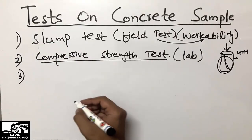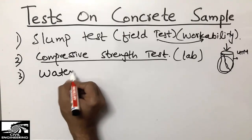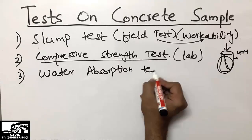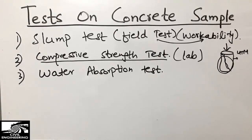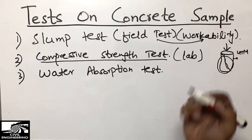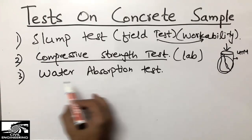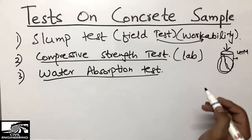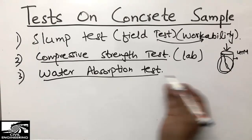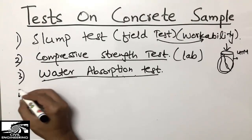The third one is the water absorption test on concrete. This is also a very important test to find the absorption rate of a concrete's inner and outer surface. We perform this water absorption test to evaluate how much water the concrete surface absorbs.